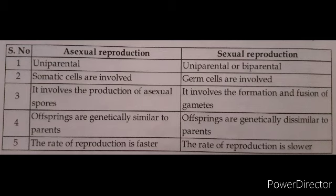What are the differences between asexual and sexual reproduction? Asexual reproduction is uniparental and involves somatic cells, while sexual reproduction is biparental and involves germ cells. In asexual reproduction, offspring are genetically and morphologically similar to parents, while in sexual reproduction they are dissimilar. Asexual reproduction is fast; sexual reproduction is slow.